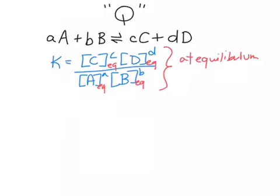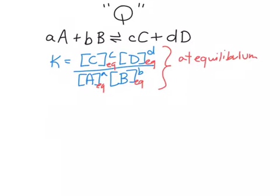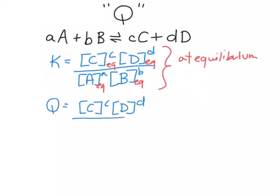If we want to determine which way a reaction should shift to get to equilibrium, we calculate Q. You'll notice that Q looks an awful lot like K — it's still products over reactants — but this time the concentrations are not at equilibrium.